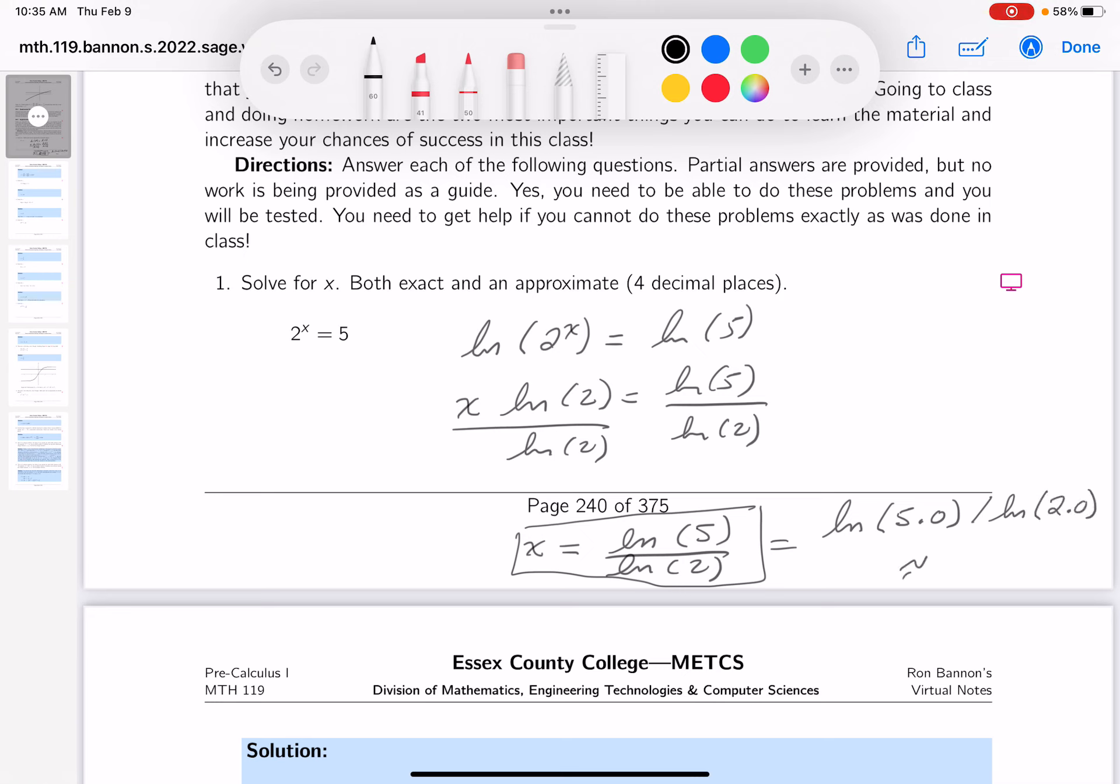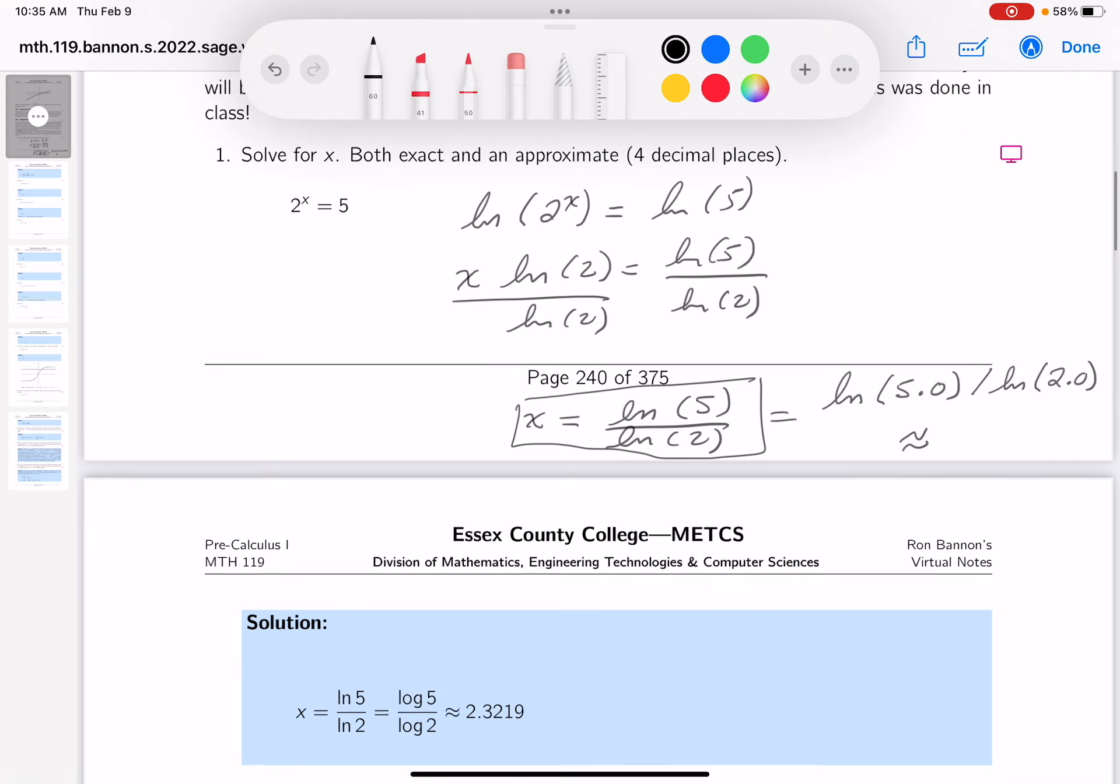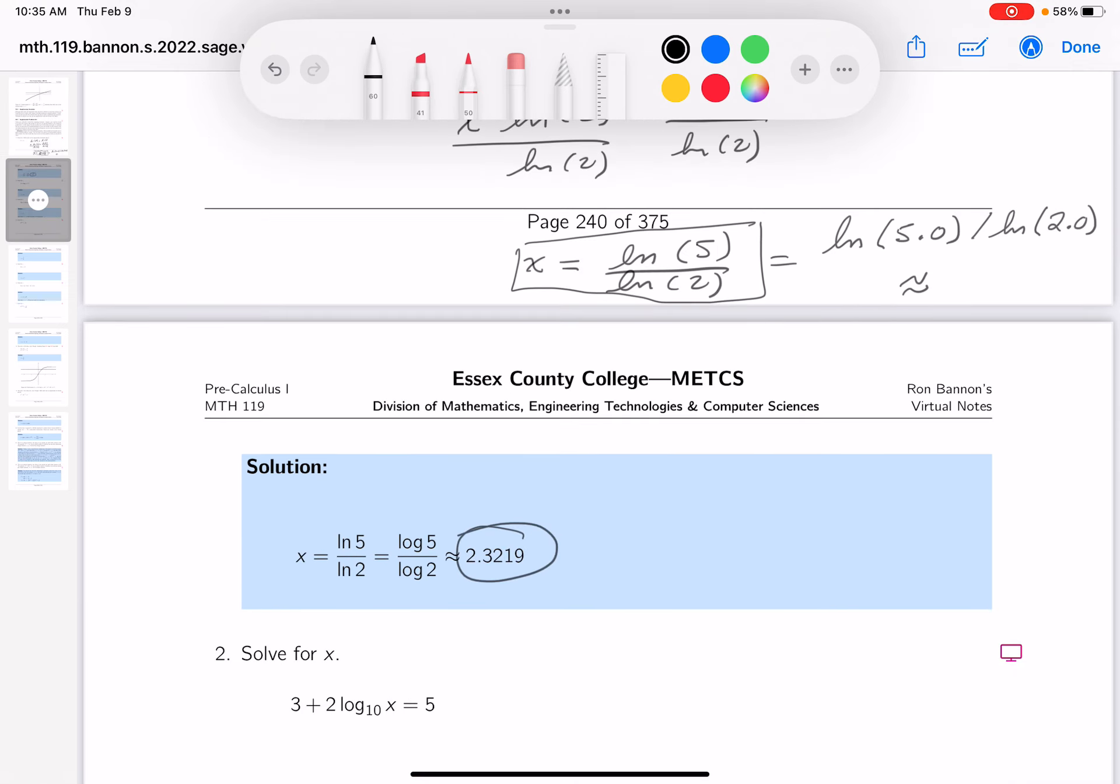And if you do that, you can approximate the answer to four decimal places. And you should get the number that we're giving to you over here.